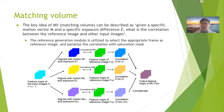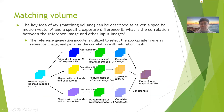The matching volume can be described as: given a specific motion M and a specific exposure E, what is the correlation between the reference image and the other input images? For each input image, we have a feature map, and we align it using the specific motion vector M and exposure E. After alignment, we compare this aligned feature map to the reference image to see what the correlation is. We then calculate those correlations together as the final output of the matching volume.